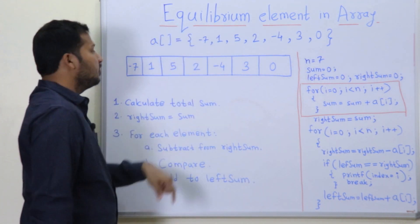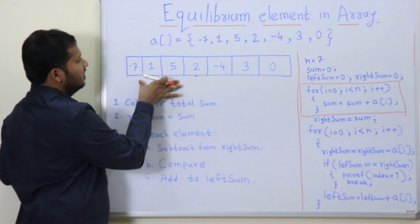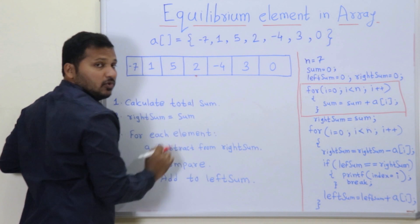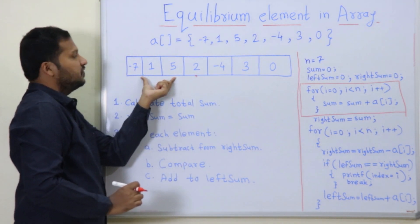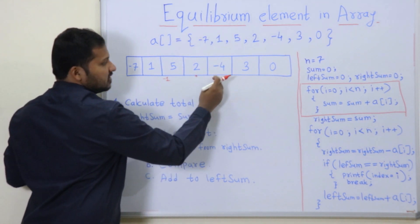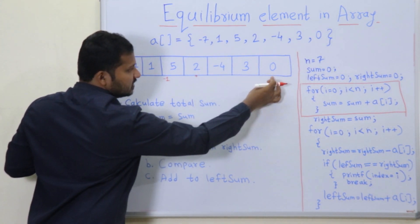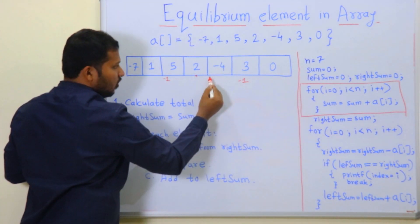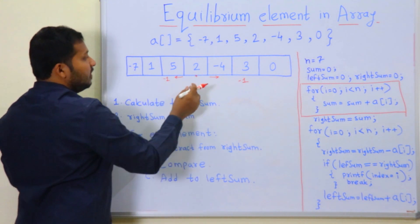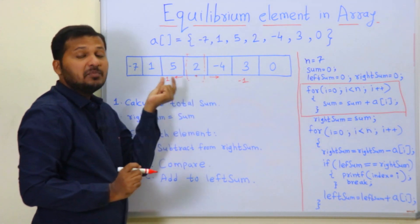Take the example of element 2. Its left side elements are -7, 1, and 5. Its right side elements are -4, 3, and 0. The sum of the left side: -7 + 1 = -6, + 5 = -1. The sum of the right side: -4 + 3 = -1, + 0 = -1. Both sums equal -1, so element 2 is an equilibrium element.